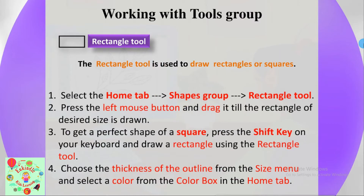The next tool is the rectangle tool. The rectangle tool is used to draw rectangles or squares. Select the Home tab, go to the Shapes group, and find the rectangle tool. Press the left mouse button and drag until the rectangle of desired size is drawn. To get a perfect square, press the Shift key on your keyboard and draw using the rectangle tool.